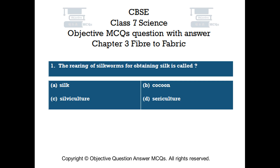Question number 1. The rearing of silkworms for obtaining silk is called: Option A Silk, Option B Cocoon, Option C Silviculture, Option D Sericulture.